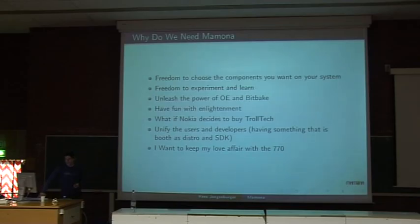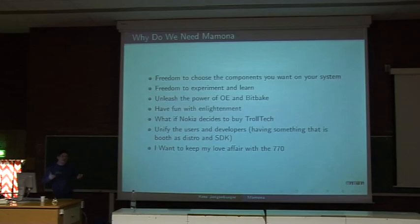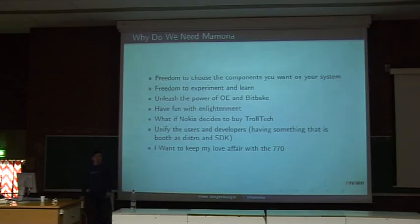You keep control. The current implementation is based on Enlightenment, which is a pretty nice desktop with some bling-bling factor. You have control — for example, what if Nokia decides to buy Trolltech? You could say: I still have my Nokia 770. I just love this device. It has a value for me, and I want to keep running it for years — I don't want to have an end-of-life cycle. I decide when it's done with the hardware.